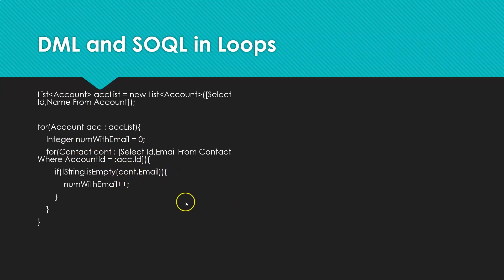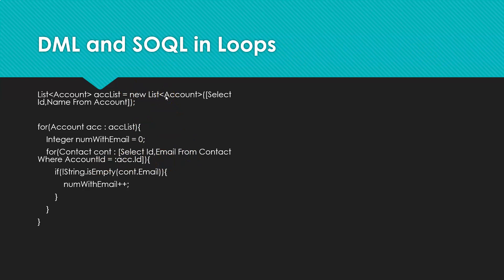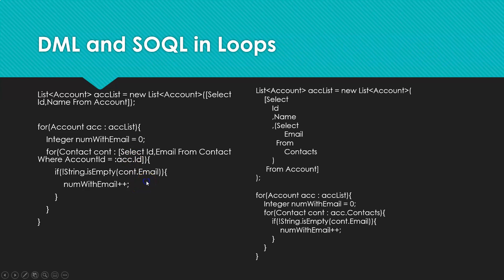Now regarding SOQL queries — in this example you can see I have a SOQL query inside a for loop. This code first defines a list of accounts by selecting all accounts, then iterates through that list. For each account, it sets a variable called 'number with email' to zero and grabs the contacts within that account where the contact account ID equals the account ID. If you have 10,000 accounts, you're going to run 10,000 SOQL queries, which will hit a governor limit.